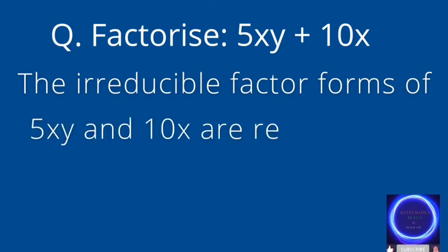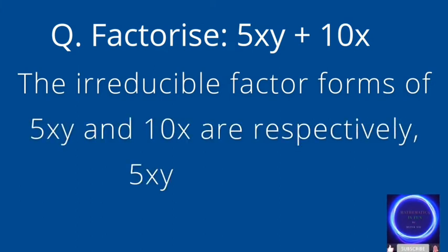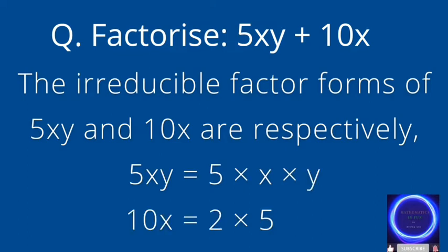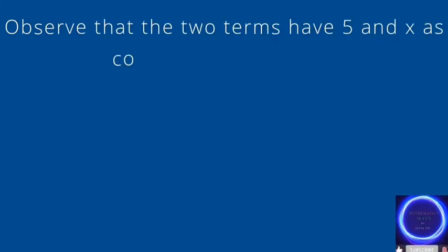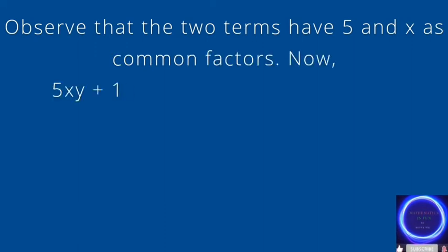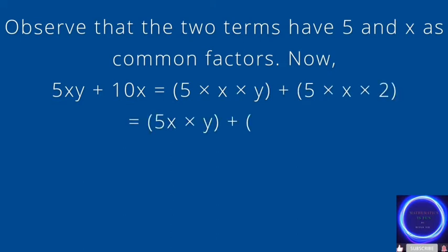Next question: factorize 5xy plus 10x. The irreducible factor forms of 5xy and 10x are respectively written. 5xy is nothing but 5 into x into y, and 10x is nothing but 2 into 5 into x. Out of these two, we have to take the common factor out. You can easily see that the two terms have 5 and x as common factors. Combining 5 and x, you can take 5x as whole common.